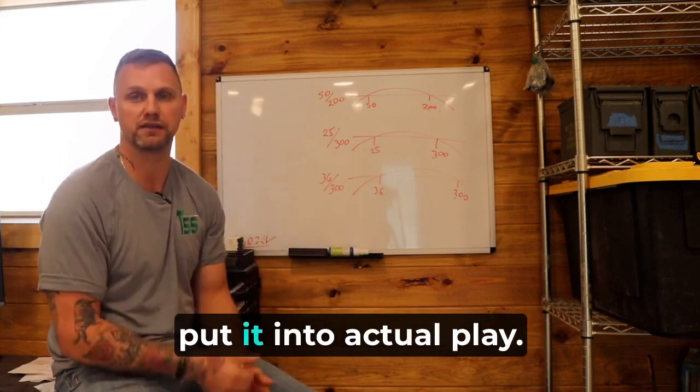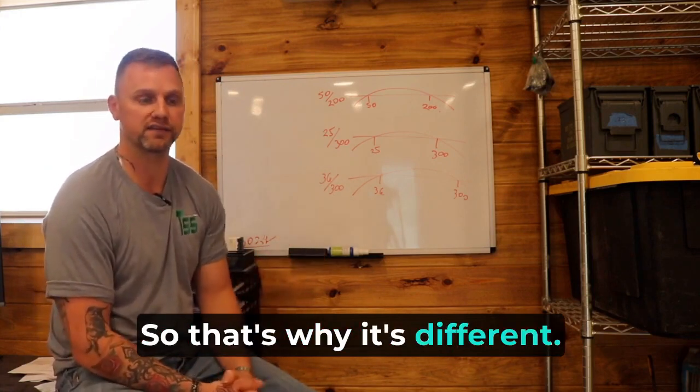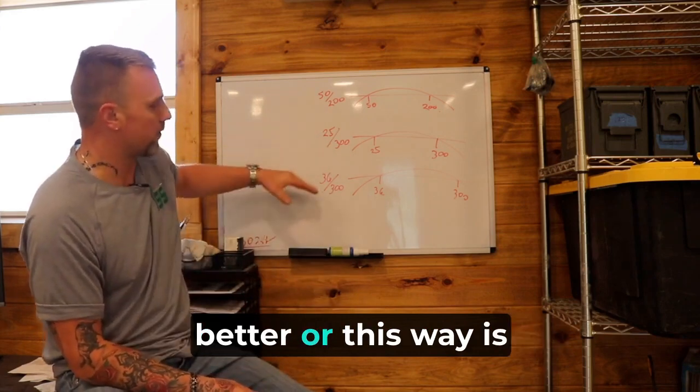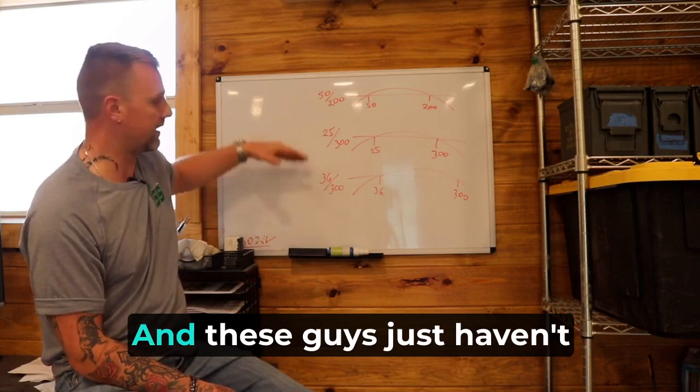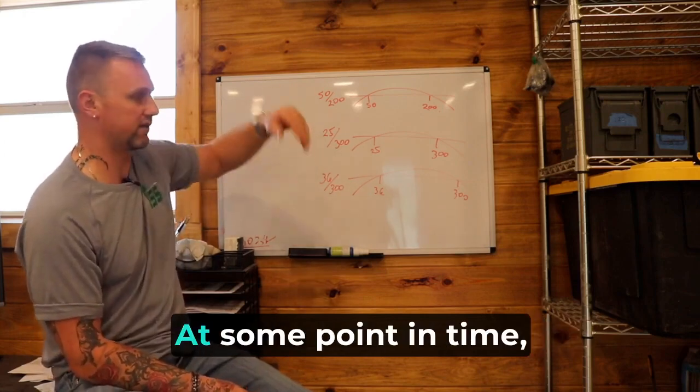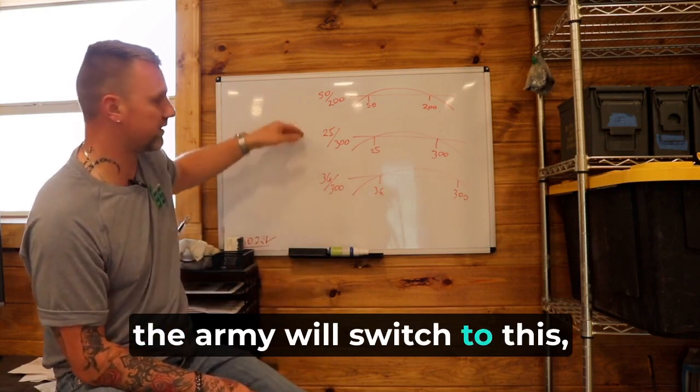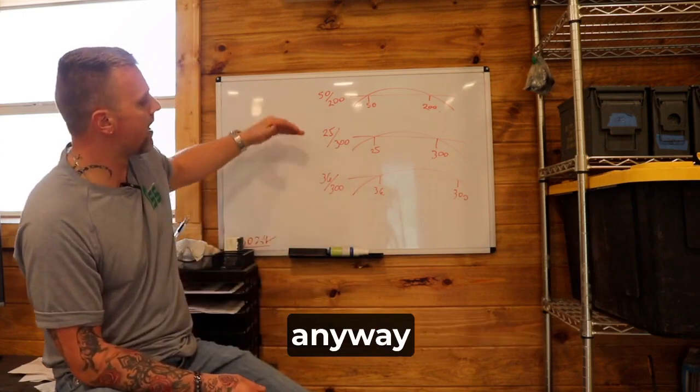So if the Army decided today that they were going to swap to the 36 yard zero, it would take 10 years to put it into actual play. So that's why it's different. It's not because this way is better or this way is better so much. It's that this way is inherently better. And these guys just haven't caught up to this way because it takes so much longer. At some point in time, the Army will switch to this, but they may be on a new battle rifle before that actually happens.